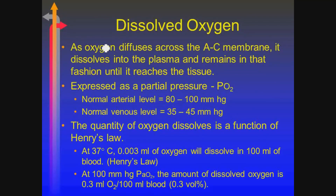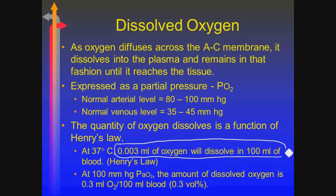Let's talk about dissolved first. We know that as oxygen comes across from the alveolus into the pulmonary capillary, across the alveolar capillary membrane, it stays as a dissolved element going into the plasma — the whole Henry's, Graham's, diffusion, Fick's law. We express that as a partial pressure in the arterial system; we said it's 80 to 100. Venous values are about 40, with a range of 35 to 45. How much can dissolve depends on solubility based on Henry's law, and the number you need is 0.003 milliliters of oxygen will dissolve in 100 milliliters of blood.